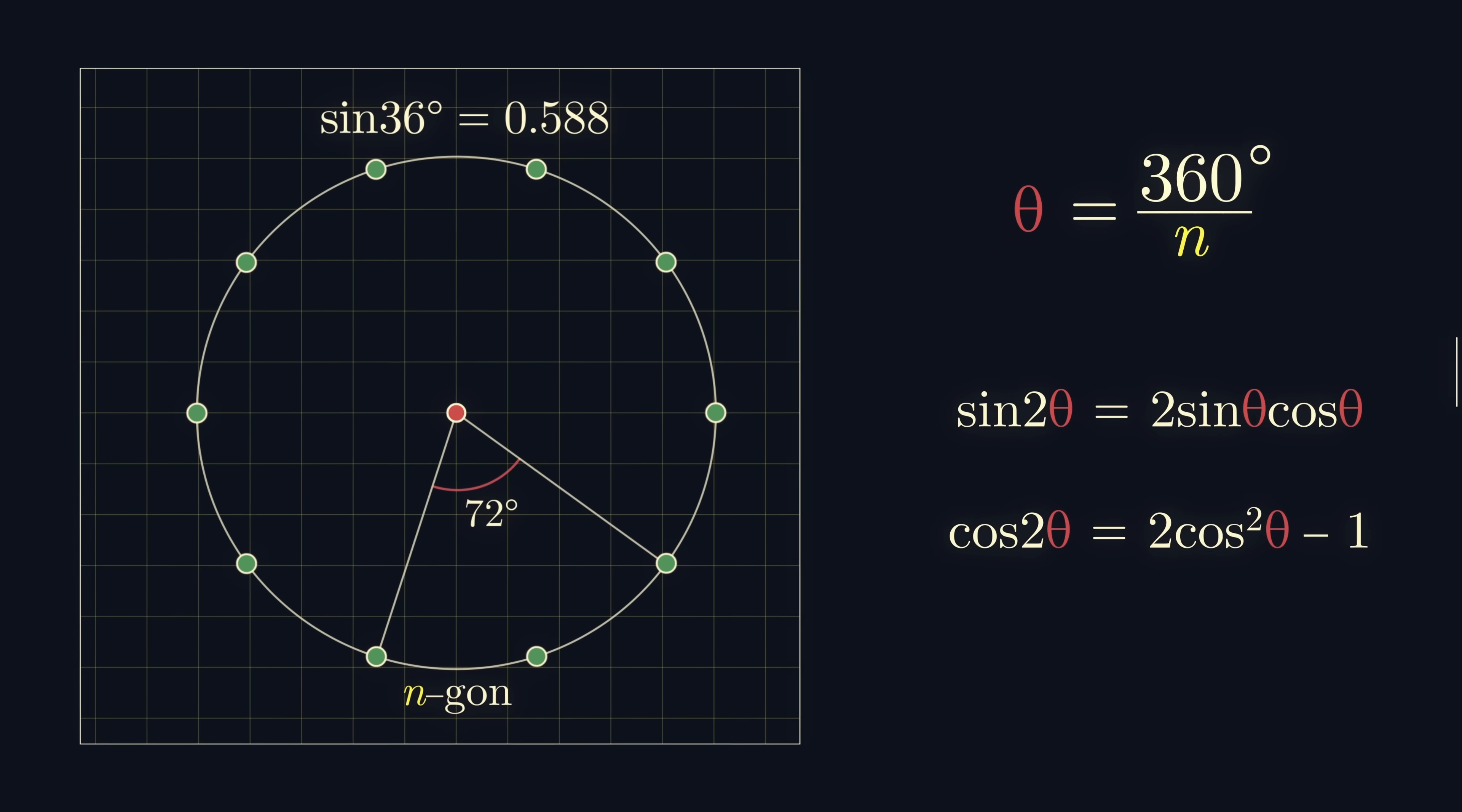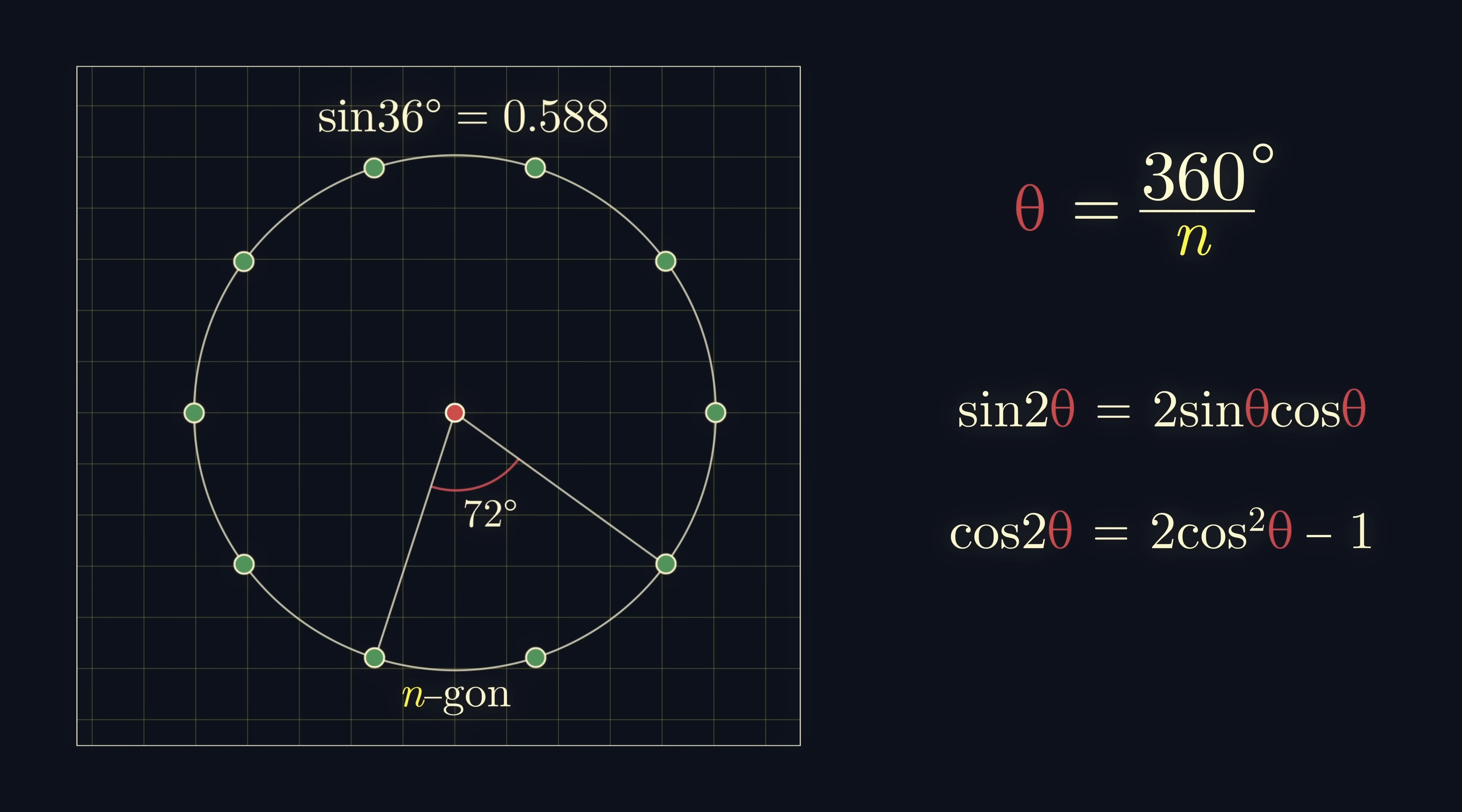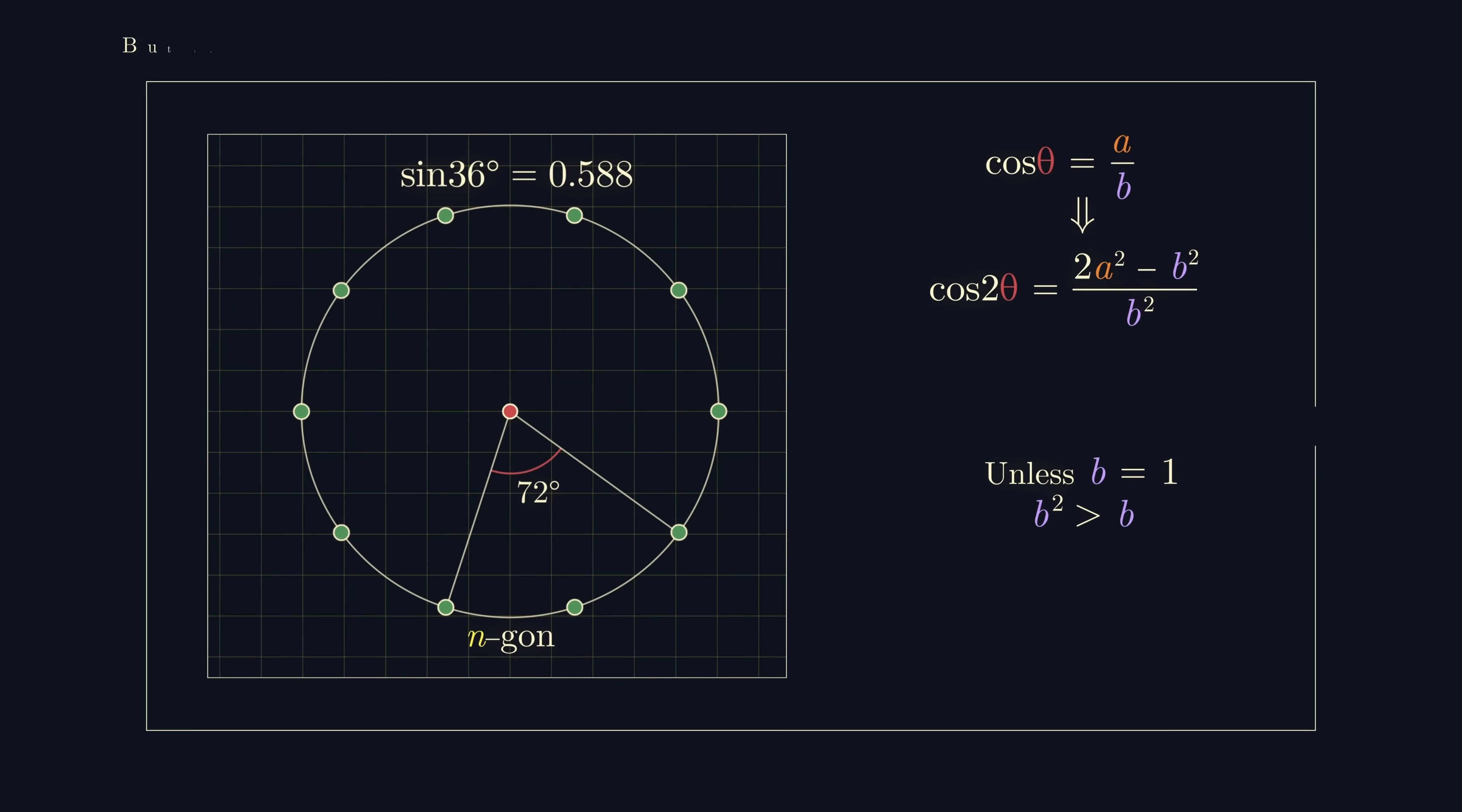This tells us if cos theta was rational, then cos 2 theta must also be rational. In particular, if we write cos theta as a over b, where b is positive and a and b are integers, sharing no factors, then we get an expression for cos 2 theta. Now, unless b equals 1, the denominator of our new fraction is larger than our old fraction. But, is this fraction necessarily fully simplified?